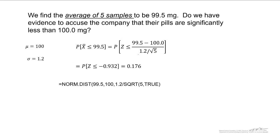And when we do the analysis here, we find that the probability is about 0.176. We can also do this in Excel. I think I forgot a parenthesis there. An average of five samples less than or equal to 99.5 happens about 18% of the time. This isn't significantly rare. It occurs 18% of the time if the mean really is 100 milligrams.